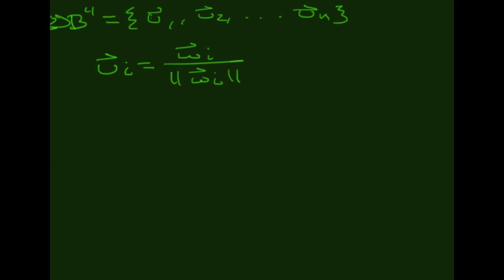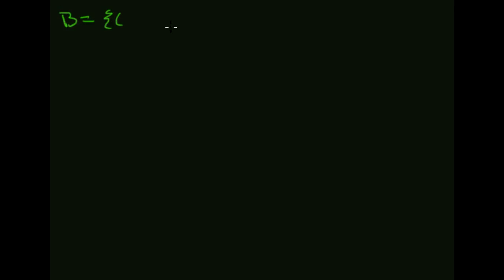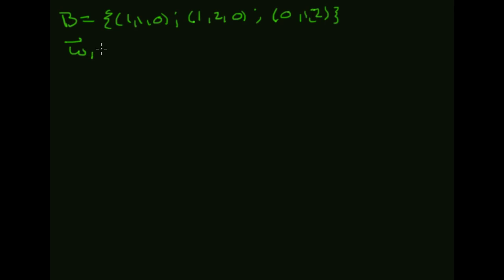We should work through at least one of these by hand — they're a little tedious. Let's start with a basis for R3: (1, 1, 0), (1, 2, 0), and (0, 1, 2). You can verify that's a basis by putting it into a matrix and checking that Gauss-Jordan gives the identity. The easy move here is that W1 in the orthogonal basis is just (1, 1, 0).